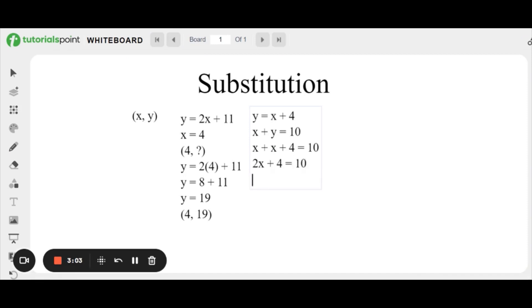2x plus 4 equals 10. Then you just subtract 4 from both sides, so the first side cancels out to be 0. You're left with 2x equals 6. Then you divide both sides by 2 to isolate the x, and you're left with x equals 3.